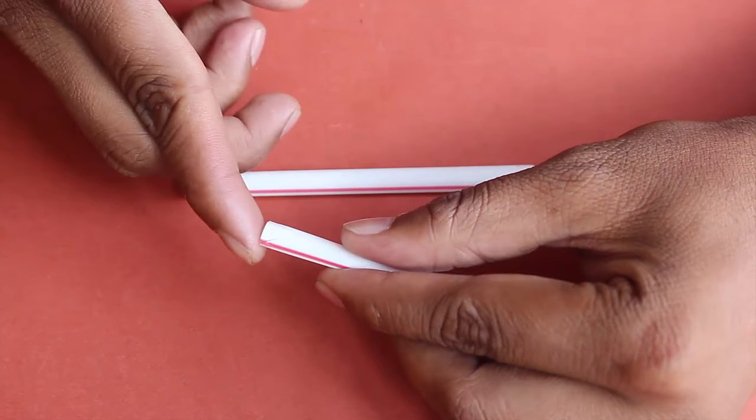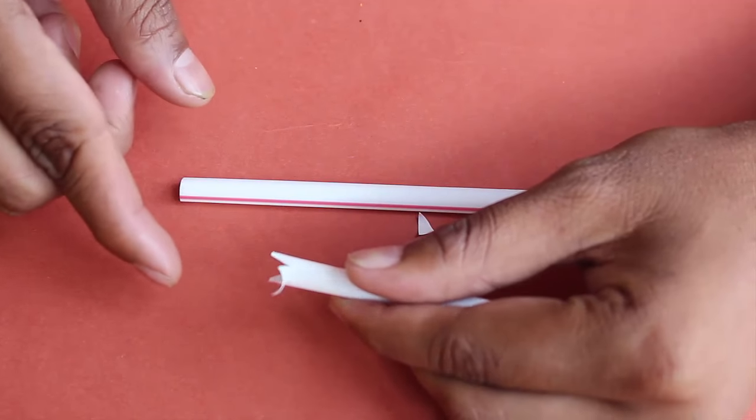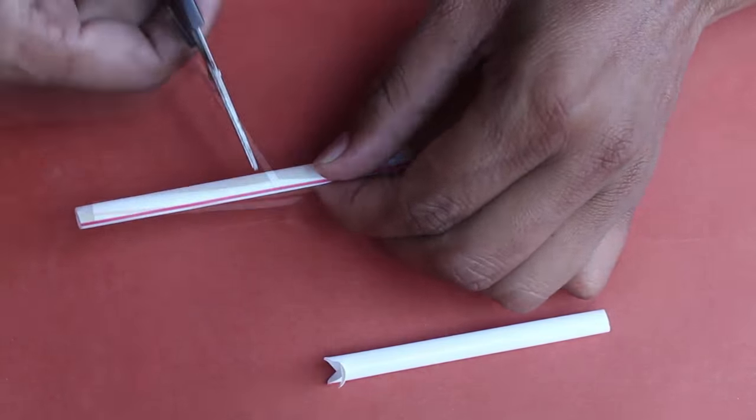Make two small cuts on the same side to make a small flap. Lift the flap at the back.